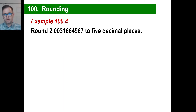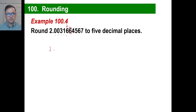Round this to 5 decimal places. Pretty simple — using the same principle. We count: 1, 2, 3, 4, and 5. This is the place we want to round to, and we look at the next digit — it's 5 or greater. So we have our 2 and 0, 0, 3, 1, and not a 6 but a 7. So the answer is 2.00317.